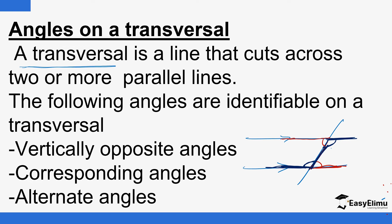Normally, alternate angles are equal. So: vertically opposite angles are equal, corresponding angles are equal, and alternate angles are also equal. If two angles happen to be vertically opposite to each other, they will definitely be equal. If angles A and B are corresponding angles, they will be equal. If angles X and Y are alternate, they are supposed to be equal.